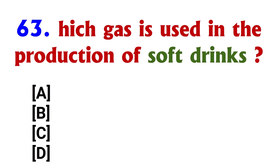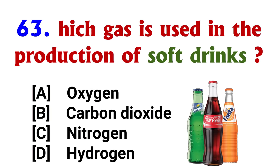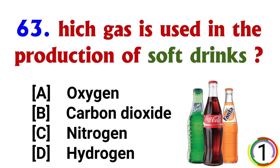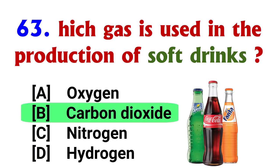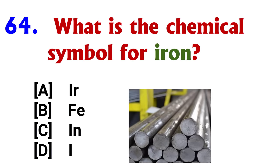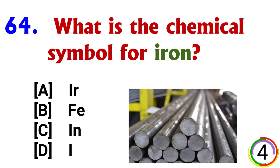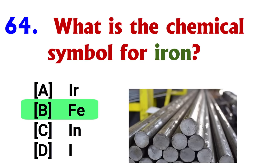Which gas is used in the production of soft drinks? Answer: option B, Carbon Dioxide. What is the chemical symbol for iron? Answer: option B, Fe.